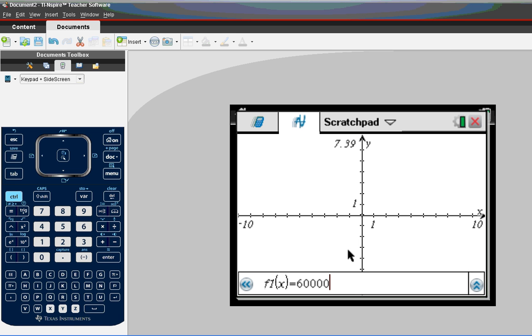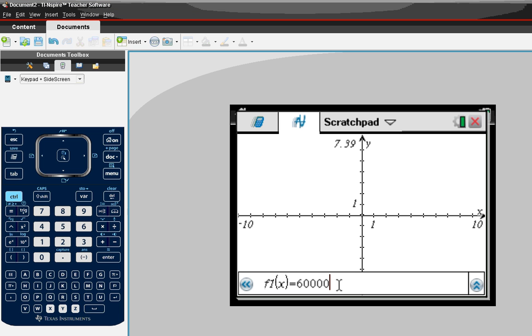Alright, so in the graph, I'm going to put my first function in as 60,000. And then I'll put in another function, and by the way, you're not going to see that first one because it's way off the graph. But my second function will be the right hand side of my equation, which was 12,000 times 1 plus 0.14.